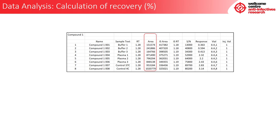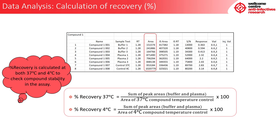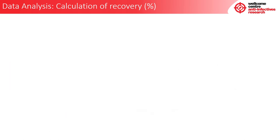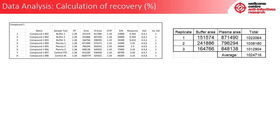Now for the calculation of percent recovery. For this you will need your raw data with your areas and the following equations: one detailing percent recovery at 37 degrees and the other detailing percent recovery at 4 degrees. Percent recovery is calculated at both 37 and 4 degrees Celsius to check compound stability in the assay. You will need a table detailing replicate number, buffer area, plasma area, total, and average. First, enter your buffer areas for each replicate, then do the same for the plasma areas, and total and average these at the bottom.